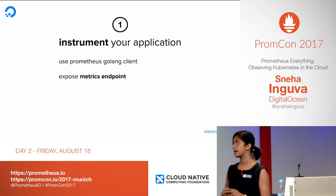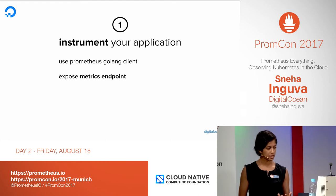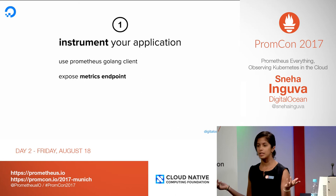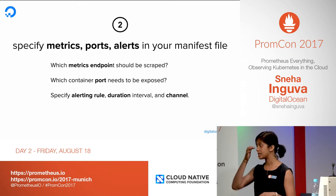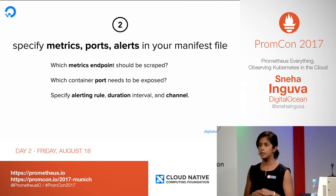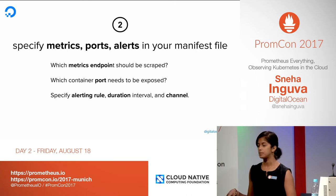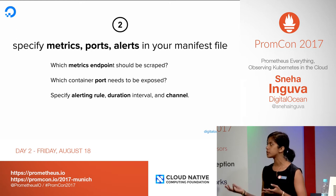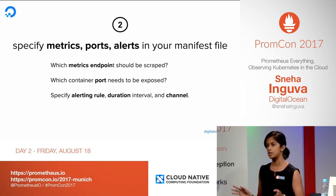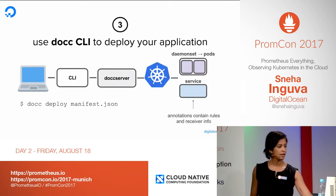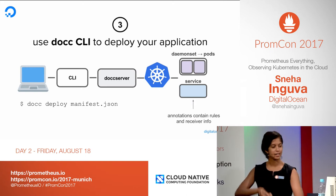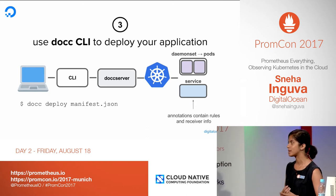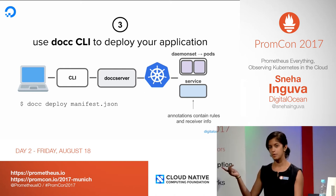To set up monitoring for your application, you would instrument your application using the Prometheus Go client, expose your metrics endpoint, then specify all the details in your JSON manifest file. You would indicate which metrics endpoint you want scraped, which port needs to be exposed, specify the alerting rule, specify the duration, and indicate where you wanted your alerts to go. In our case, we limited ourselves to Slack and PagerDuty. You would then use the CLI to deploy, DOCC server would communicate with the Kubernetes API, create pods, and create the service primitive.